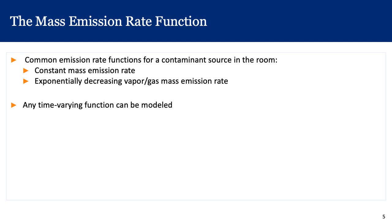Let's look at the mass emission rate function first. The emission rate can be any kind of function and could vary with time in any kind of way, but most of the models we are going to consider assume two types of variation with time. The first assumes a constant mass emission rate, meaning it doesn't change with time. The second assumes that the emission rate exponentially decreases over time. Any time-varying function can be modeled, although in today's and the next lecture we will not be discussing arbitrary time-varying functions.